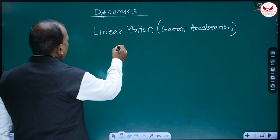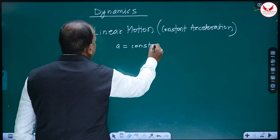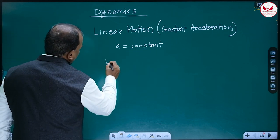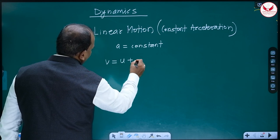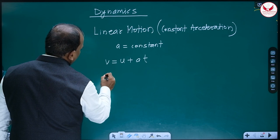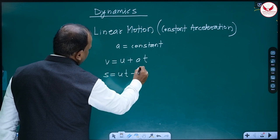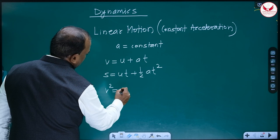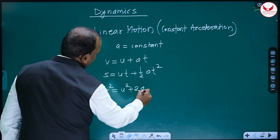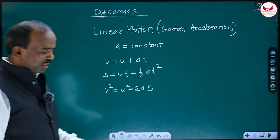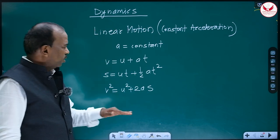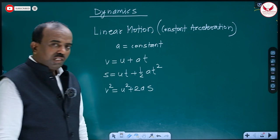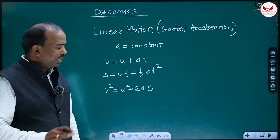If acceleration a is constant — either straightforwardly mentioned or given as a value — you have to solve problems using the equations of motion: v = u + at, s = ut + ½at², and v² = u² + 2as. All students know these three equations, but using them correctly is very important. In linear motion, when an object is dropped or thrown vertically upward, that is also linear motion and is treated as motion under gravity.